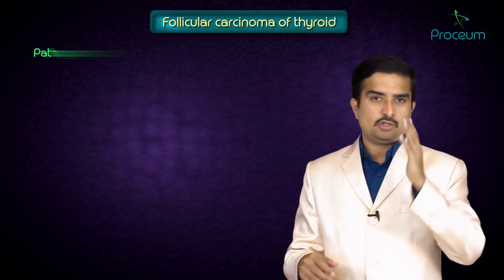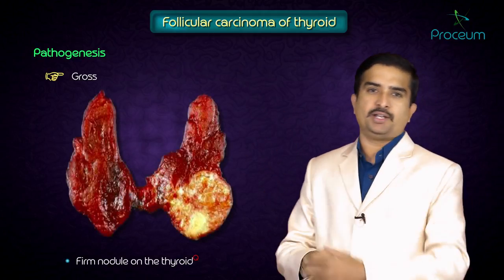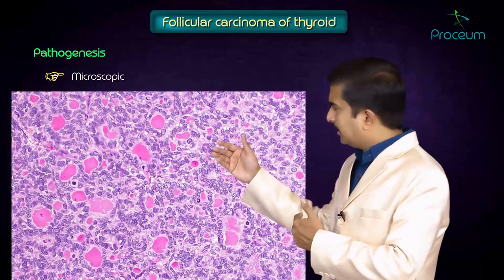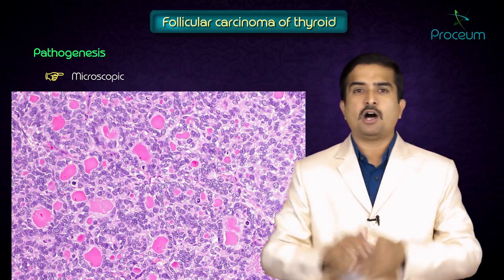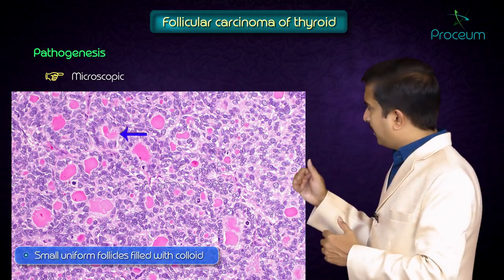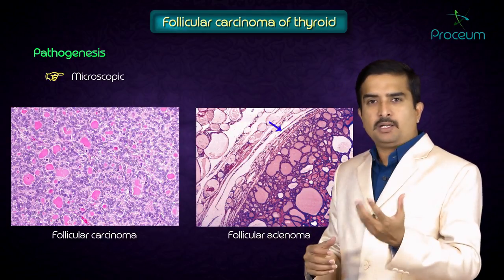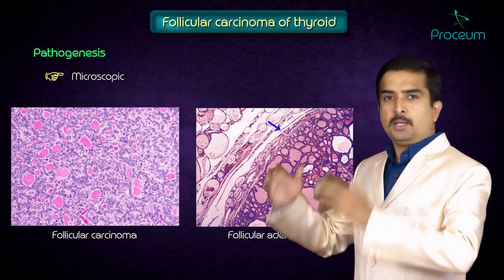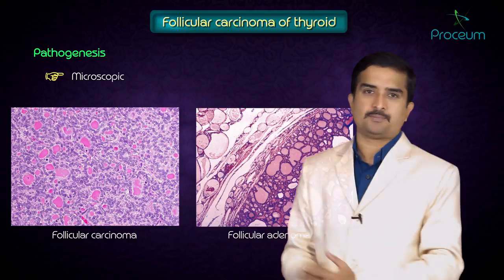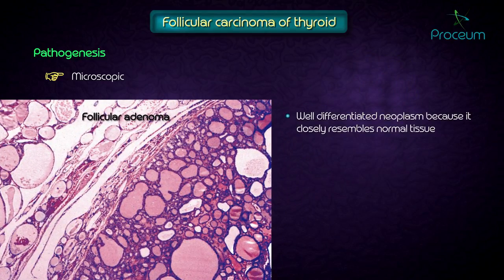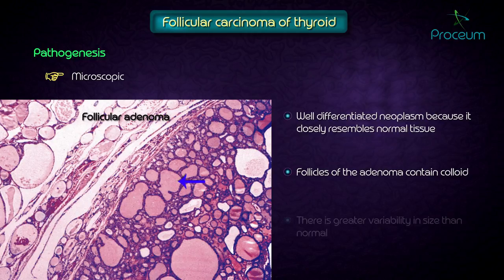Gross pathology shows a firm nodule of the thyroid, as seen in this picture. Microscopically, follicular carcinoma shows small uniform follicles filled with colloid. The presence of an intact capsule differentiates a benign follicular adenoma from follicular carcinoma, because in the latter the capsule is not intact. The adenoma is a well-differentiated neoplasm closely resembling normal tissue, and the follicles contain colloid but with greater variability in size compared to normal.